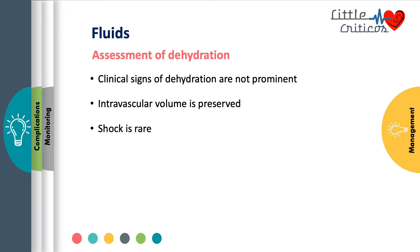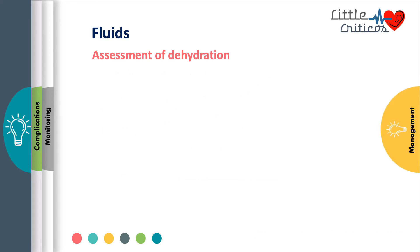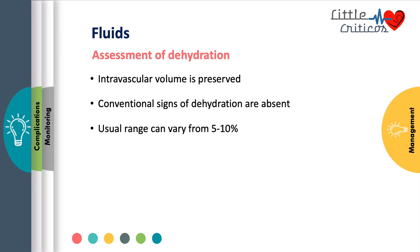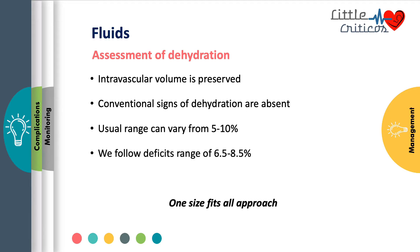The clinical signs of dehydration are not prominent in DKA. The intravascular volume is well preserved and shock is rare. A study by Coeves suggested there was no agreement between clinician-assessed dehydration and measured dehydration. Intravascular volume preservation leads to absence of conventional signs of dehydration, and gross underestimation of dehydration is usually done by the clinician. The usual range of deficit varies from 5 to 10%: in mild to moderate cases 5 to 7%, and in severe cases 7 to 10%.